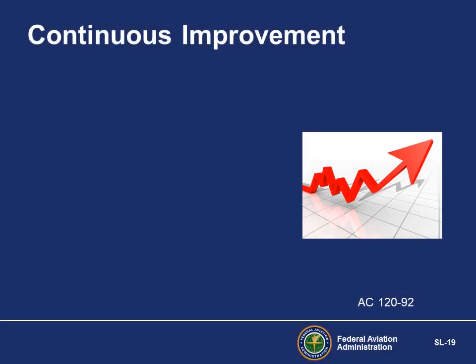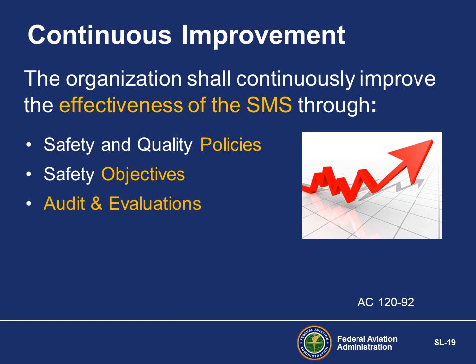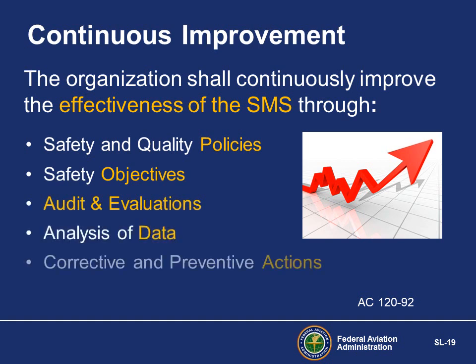While Management Review closes the SMS loop, Continuous Improvement ties the knot that combines the elements of SMS into a whole. As stated in the SMS framework, the organization will develop and maintain a process to identify the causes of substandard safety performance, determine the implications of substandard safety performance, and eliminate or mitigate such causes. The SMS framework provides guidance through safety and quality policies, safety objectives, audit and evaluation results, analysis of data, corrective and preventative actions, and management reviews — covering just about everything in the SMS operational environment.